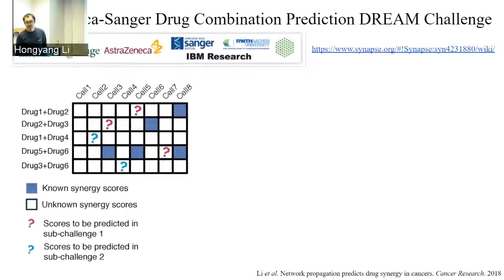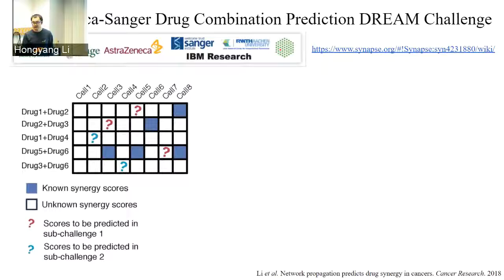The challenge had two sub-tasks. In sub-challenge one, using a table where rows are drug-drug combinations and columns are cell lines, the blue entries have known synergy scores. For a given combination with known scores in some cell lines, you predict the unknown cell lines — the red question marks. In sub-challenge two, you predict combinations where no synergy score exists in any cell line — the blue question marks.